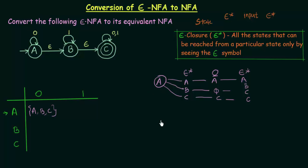Now let us do the same thing for input 1. The state is A, so we find its Epsilon Closure — A, B, C — and check on input 1. On input 1, A does not go anywhere, so A goes to phi. B on input 1 goes to B itself. And C on input 1 goes to C itself. So we have states B and C from the input 1 transitions.